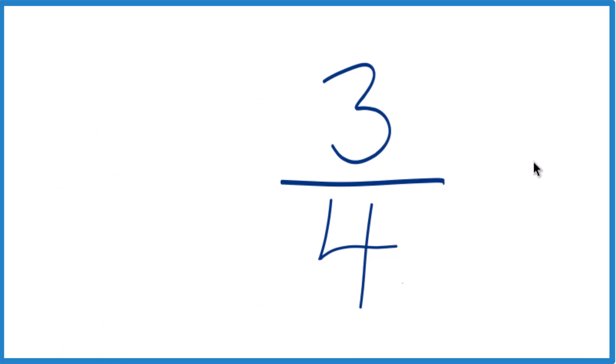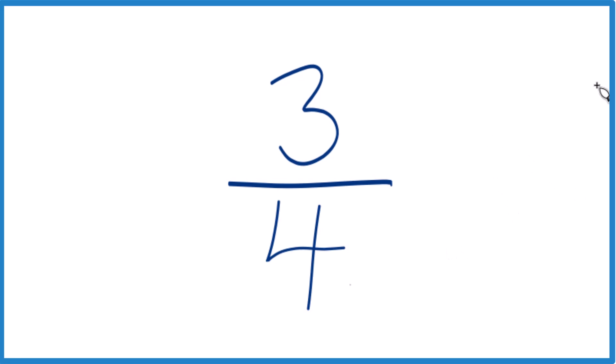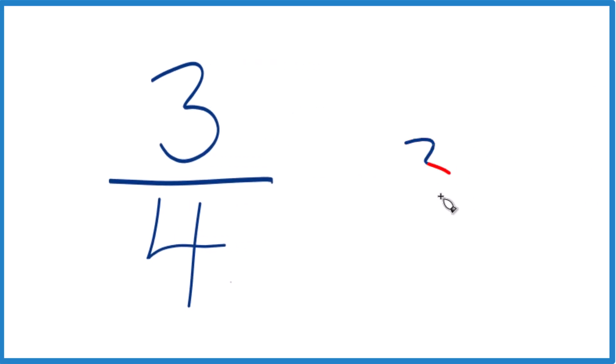Then 3 fourths, to get that to be a decimal, you could do it on a calculator, or you could take 3, see how many times 4 goes into 3. So 4 doesn't go into 3. Let's call it 30, and then we put a 0 with a decimal point. 7 times 4, that's 28.